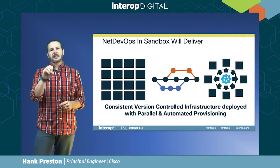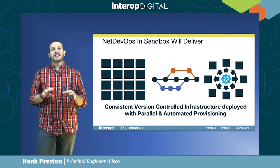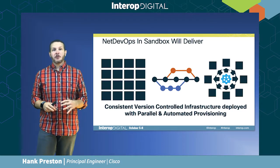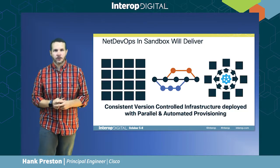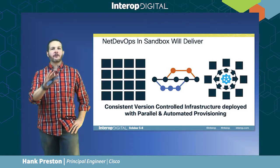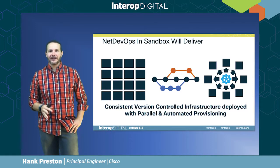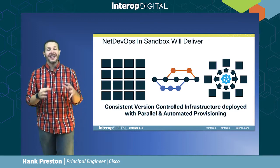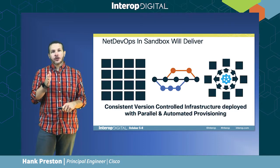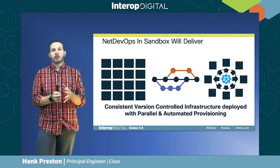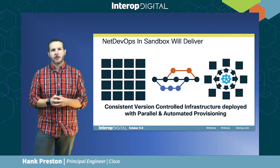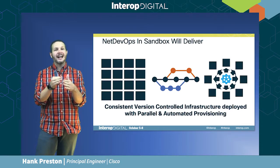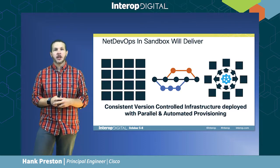What NetDevOps delivers for us inside sandbox is consistent, version-controlled infrastructure deployed with parallel and automated provisioning. We wanted to get rid of all that color variation across our infrastructure — I wanted boring blue across every rack, every switch, every router in my data center. From a version-controlled perspective, we needed the ability to branch off and explore new mechanisms and capabilities, then bring those back together to be consistent and deploy them across the entire infrastructure.